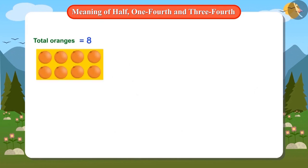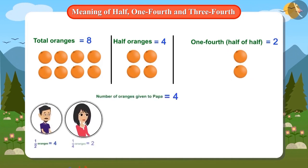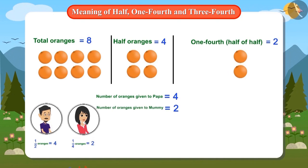We have a total of eight oranges. Half of them is four oranges, and one-fourth of half is to be calculated. Half of eight oranges is four, then half of four is two oranges. This means Papa will get four oranges, and Mummy will get two oranges. Now let's add these two. The answer is six oranges.